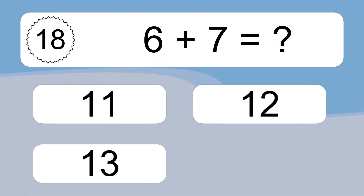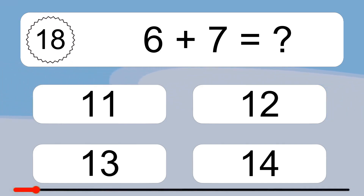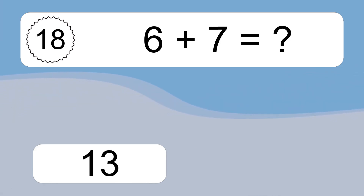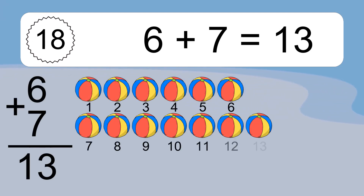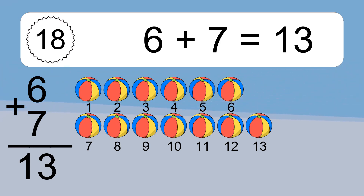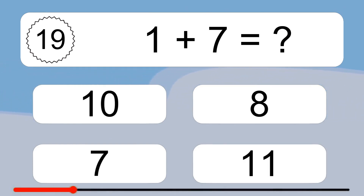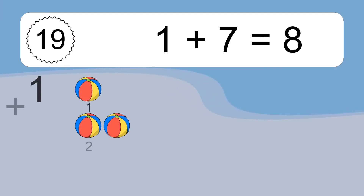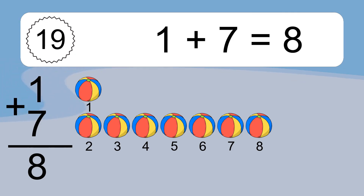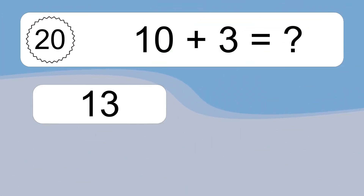6 plus 7 equals what? 6 plus 7 equals 13. Let's count it. 1, 2, 3, 4, 5, 6, 7, 8, 9, 10, 11, 12, 13. 1 plus 7 equals what? 1 plus 7 equals 8. Let's count it. 1, 2, 3, 4, 5, 6, 7, 8.